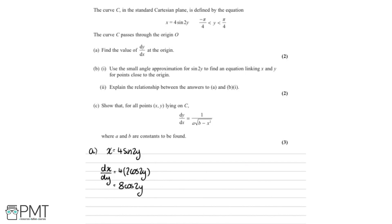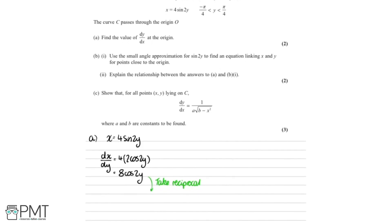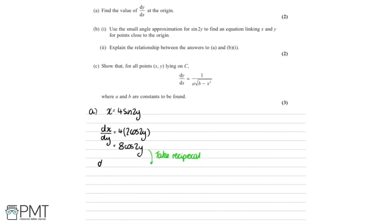This is great, however we need dy by dx, but we've got dx by dy. So what we're going to do is take the reciprocal of both sides. Doing that, we get dy by dx on the left-hand side, and 1 over 8 cos 2y on the right-hand side.